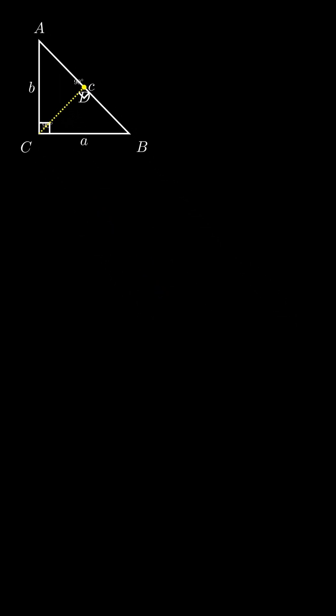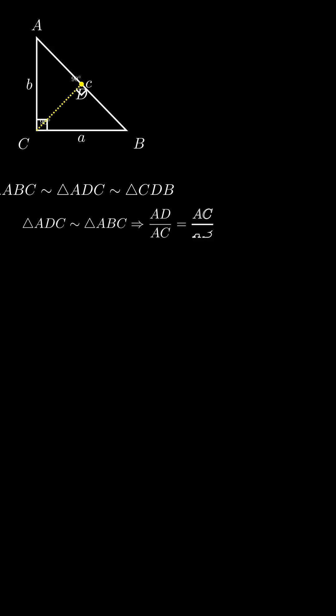From similarity of triangle ADC with ABC, we get this ratio AD over AC equals AC over AB. Simplifying, we find b² equals c times AD.